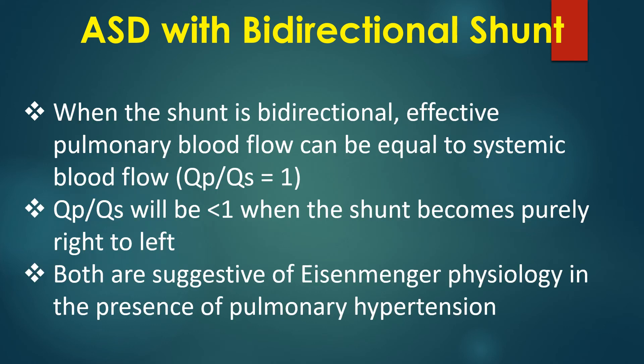When the shunt is bidirectional, effective pulmonary blood flow can be equal to systemic blood flow — Qp/Qs equals 1. Qp/Qs will be less than 1 when the shunt becomes purely right-to-left. Both are suggestive of Eisenmenger physiology in the presence of pulmonary hypertension.